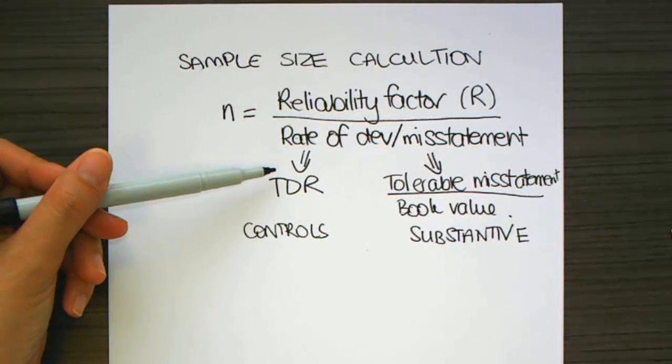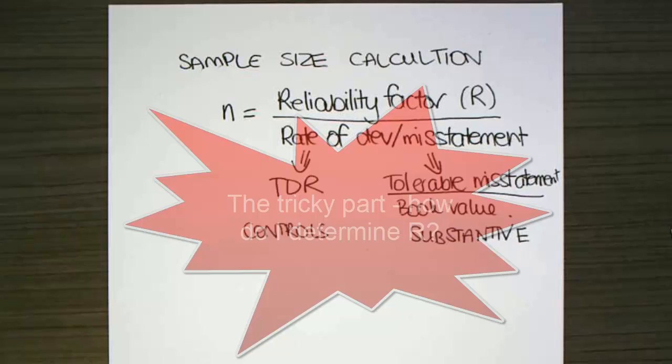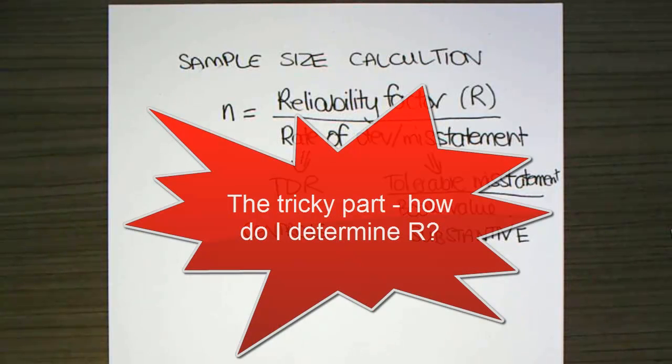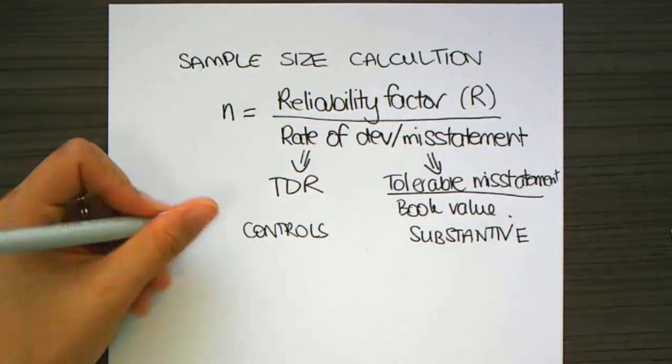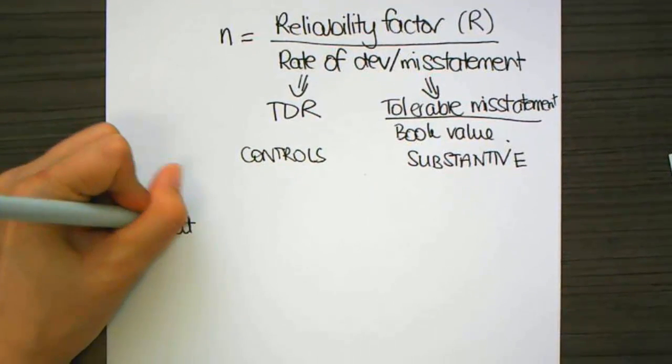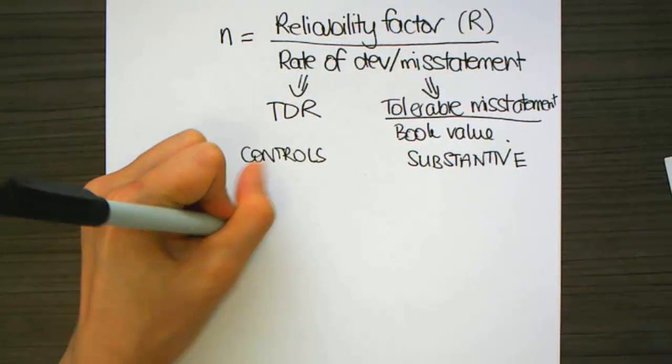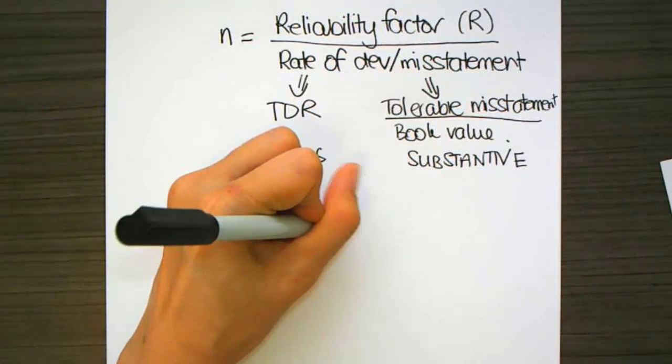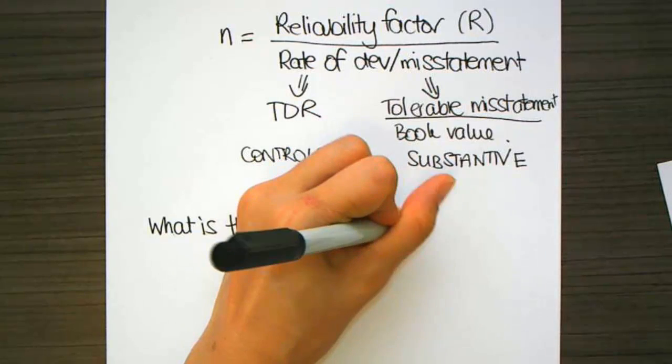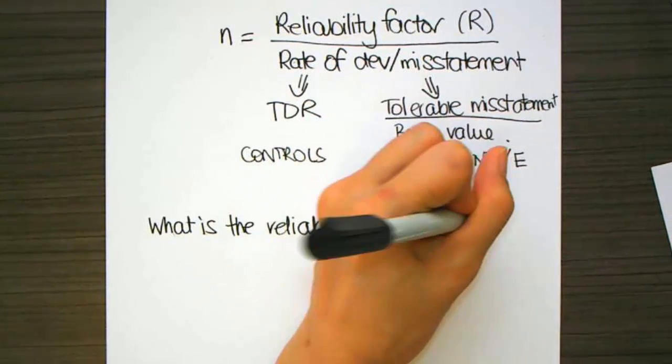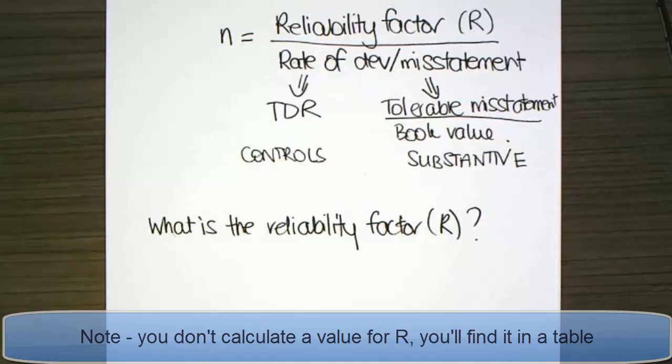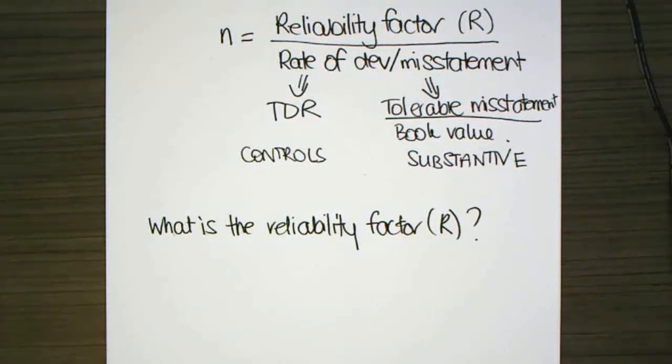So, the next question is what the heck is the reliability factor? The reliability factor is a number that we need that tells us about the desired level of assurance and the number of errors. So, that reliability factor, to be able to calculate that, we need to use a table.